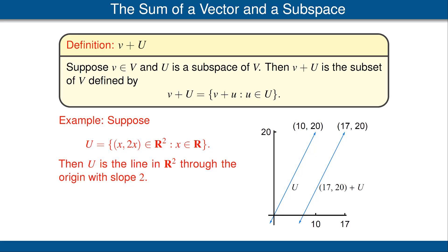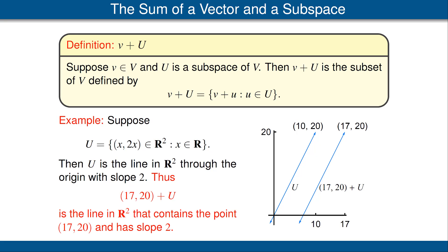Let's look at an example. Our vector space will be R², and suppose U is a subspace consisting of all vectors of the form (x, 2x) as x ranges over the real numbers. Thus U is the line in R² through the origin with slope 2. Now, let's take our point (17, 20) and look at (17, 20) plus U. That's the line in R² that contains the point (17, 20) and has slope 2.